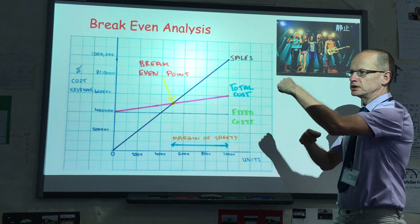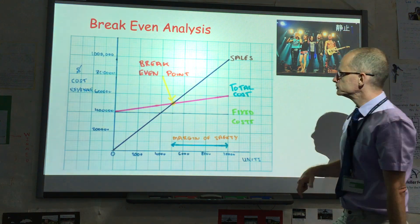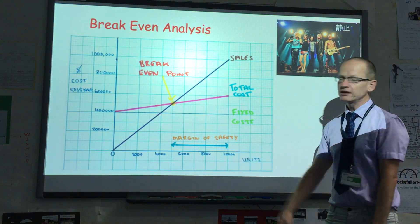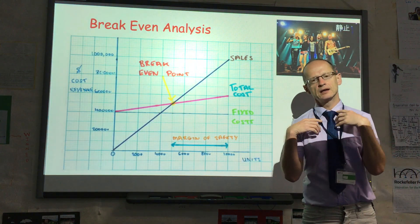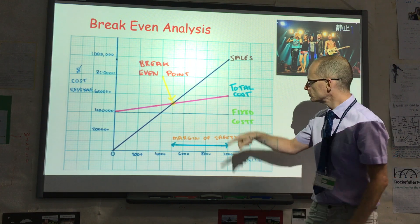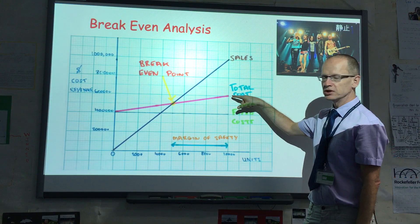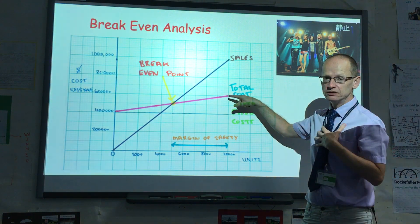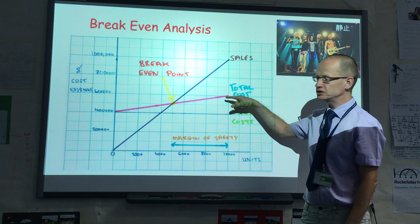So fixed costs plus variable costs equals total costs. So therefore, if we sell 10,000 tickets at a variable cost of $20, that adds up to $200,000. $200,000 plus $400,000, that gives you $600,000, as you can see here.